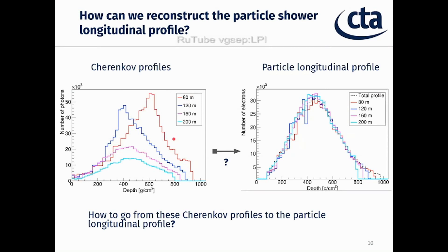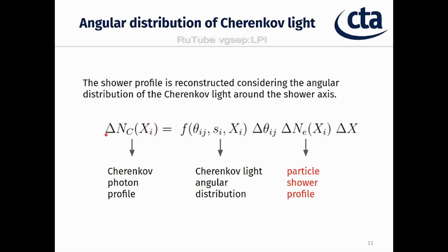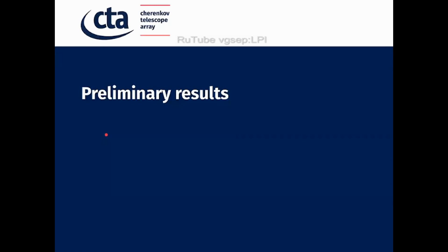This gives the Cherenkov profiles — the number of photons as a function of atmospheric depth for different telescopes. As you can see, the intensity and shape of these profiles depends on the telescope position and the distribution of Cherenkov light. The question is: how to go from these individual Cherenkov profiles to one unique final longitudinal profile? The answer is given by the Cherenkov light angular distribution function f, a parameterized function depending on angle theta around the shower axis. Using those profiles we can reconstruct the number of electrons that produced those Cherenkov photons.